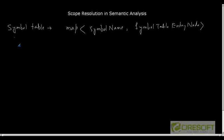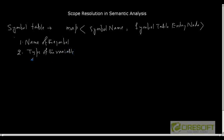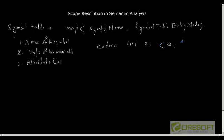The symbol table entry node contains information about a given symbol: first, the name of the symbol; then the type of the variable; and certain extra attribute values. For example, for the declaration 'extern int a', the entry node will contain the name 'a', the type 'integer', and an attribute list containing 'extern', specifying that it is an extern integer variable.